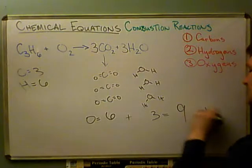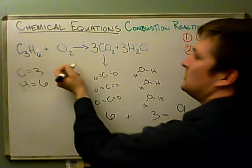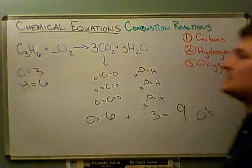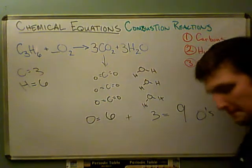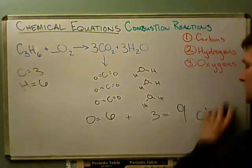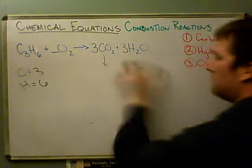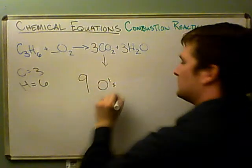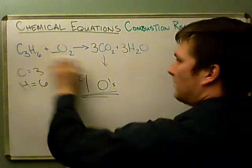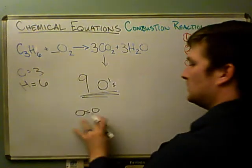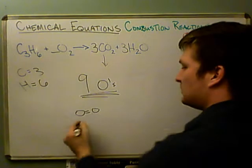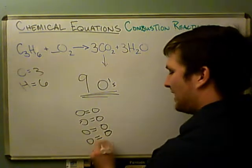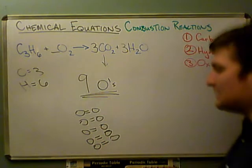So we need nine oxygens on the reactant side. But this is tricky — we have to use O₂ molecules. If I have one O₂, that's two oxygens; two gives four; three gives six; four gives eight; five gives ten. I've completely skipped over nine — so I can't get exactly nine by using a whole-number coefficient directly.